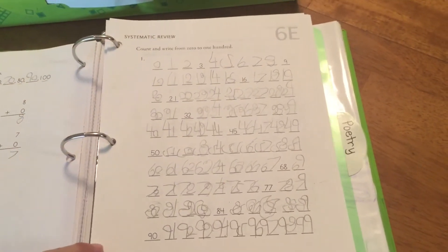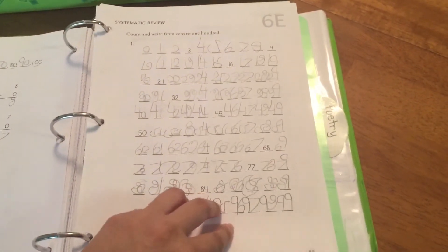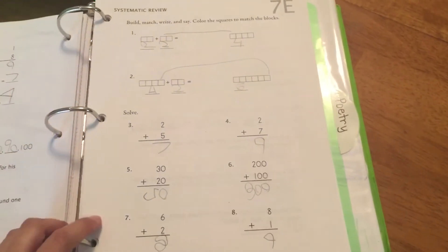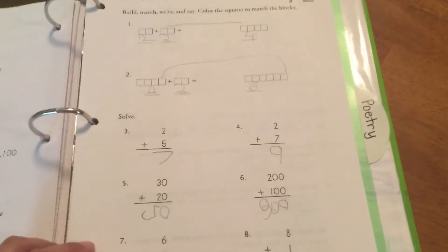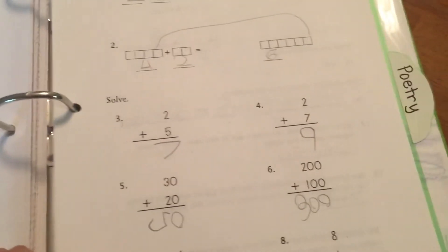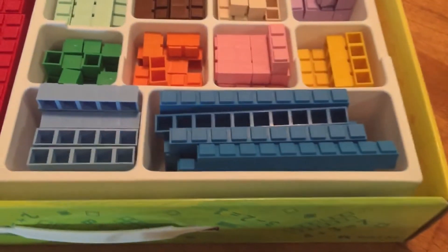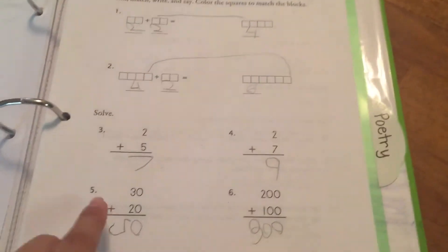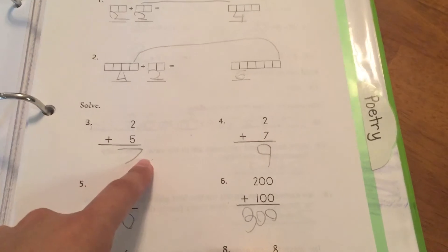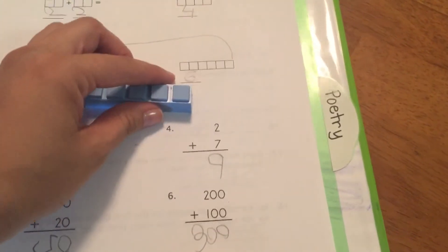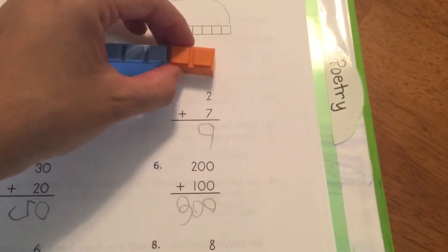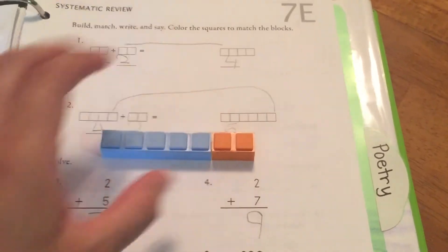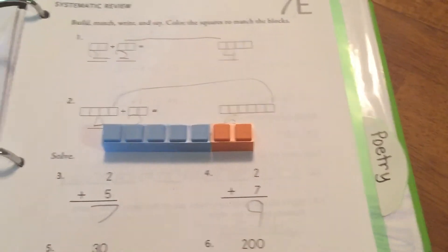This is counting from zero to one hundred and addition. The way that Math-U-See teaches addition is you take your blocks. For this problem right here, you add five plus two, then you count and it equals seven.